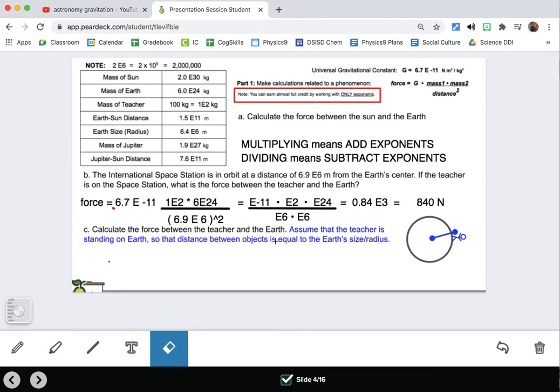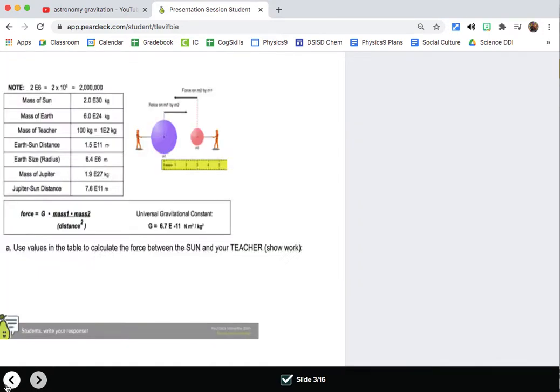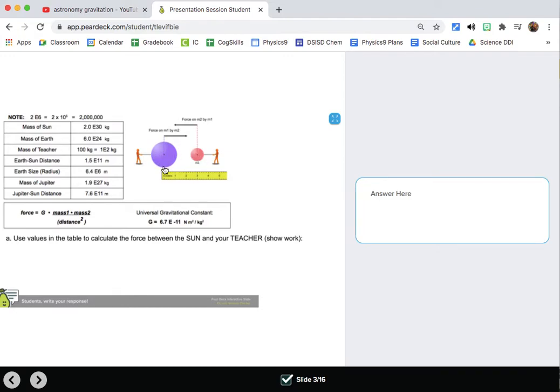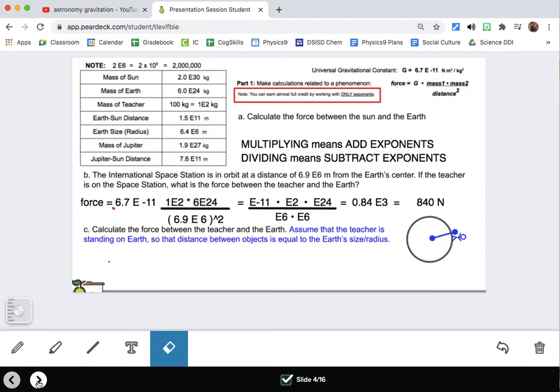Let's try this next one. Calculate the force between the teacher and the earth. Again, we're doing the exact same thing, but some numbers have changed. Let's figure out what numbers have changed. Assume that the teacher is standing on earth so the distance between objects is equal to the earth's radius. That's interesting. So if we go back to this picture, we can tell if we're making a calculation, the radius we use is actually the distance between the center of the objects. For the sun and the teacher or the sun and the earth, it would be the center of the sun to the center of the earth or your giant teacher or your regular-sized teacher. But in this case, the teacher is standing on the earth. So the distance between two objects is equal to the earth's radius.